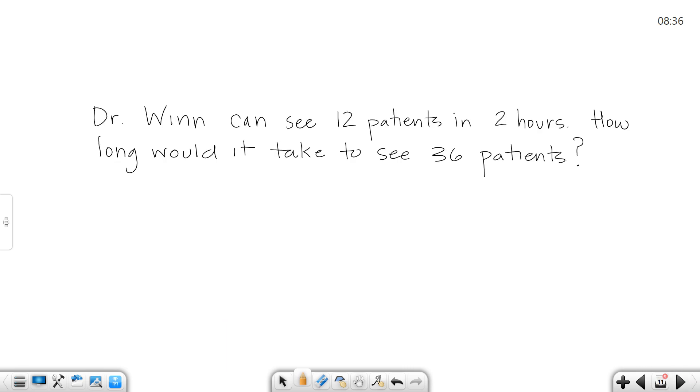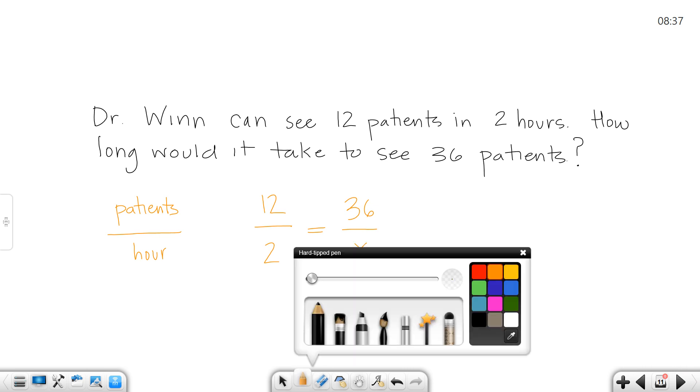Let's try the next one. Dr. Nguyen can see 12 patients in 2 hours. We can set up a proportion of patients per hour. So Dr. Nguyen can see 12 patients in 2 hours. The question says, how long would it take him to see 36 patients? How many hours? So hours is what we don't know. He can see 12 patients in 2 hours. How long, number of hours, would it take him to see 36? So that's how you'd set it up. As far as how you solve it, you can work any of the ways I've shown you. I'm going to work the diagonal way.